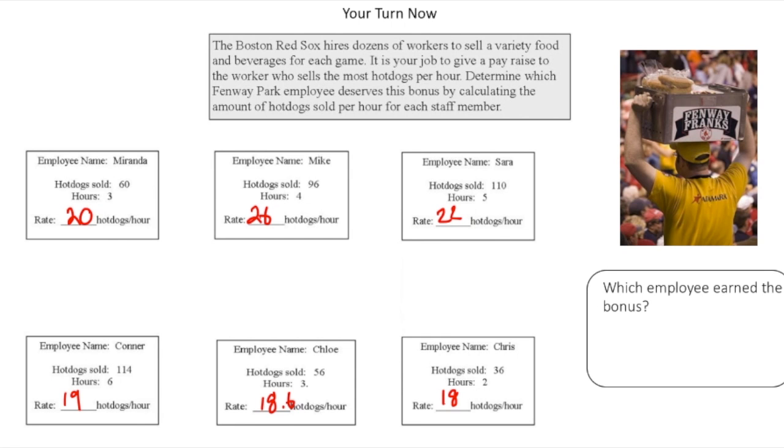Welcome back. Let's see how I do this practice problem. So for this scenario, you had six employees and they each sell hot dogs at Fenway Park, which is in Boston. And the employee that had the highest sales rate earned the bonus.